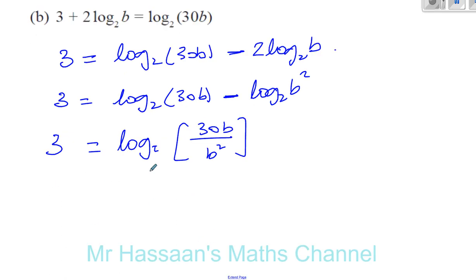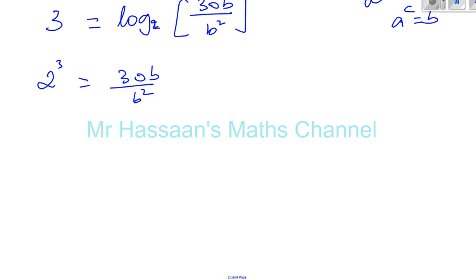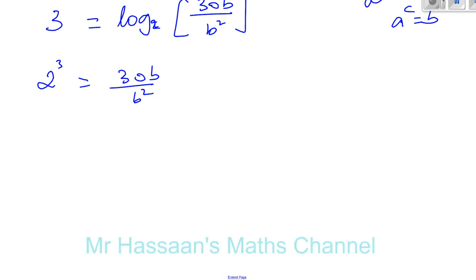Okay, so now I can say, I can use what this actually means. Remember, log to the base A of B equals C can be written as A to the power of C equals B. This is the base, this is the power, this is the result. So here we have the base, which is 2. This is the power, cubed, is equal to 30B over B squared. So what we can do now is we can solve this equation. Make some more space. We can solve this equation.